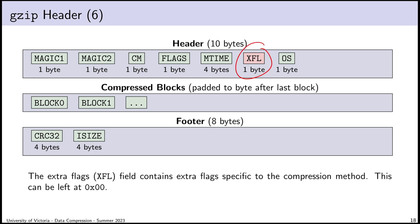Then there's XFL, the extra flags byte. I have no idea why this wasn't positioned right after the flags byte. These are extra flags for the compression method. We're going to set this to 0 as well — leave all those flags turned off.